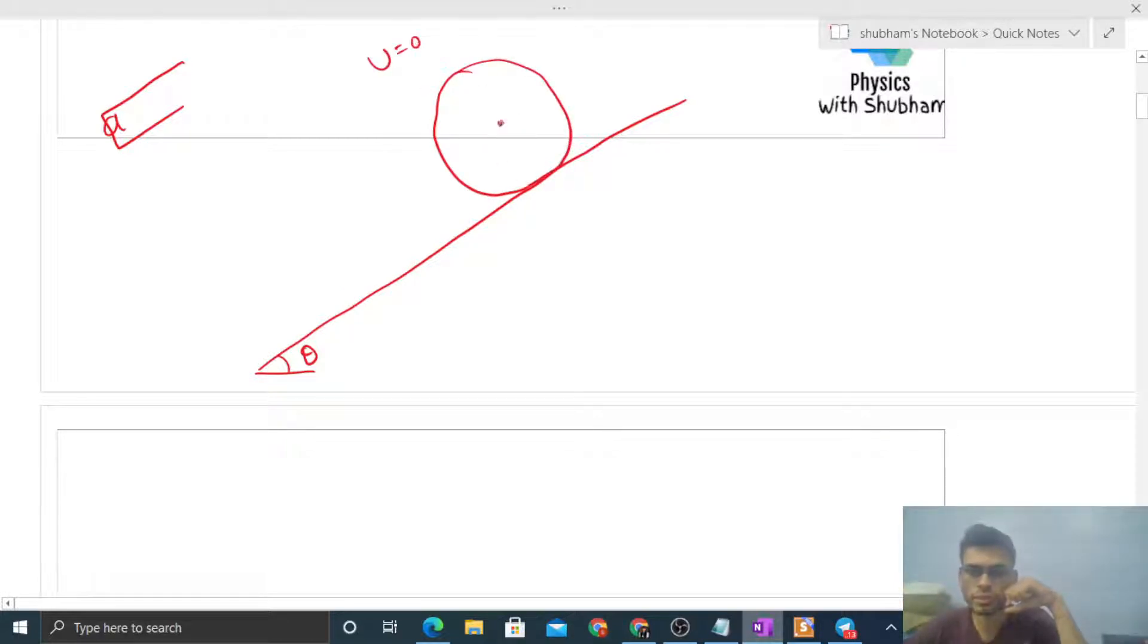Now you can see how many forces are acting. One is mg, which you can directly write as components: mg sin theta and mg cos theta. Then there will be normal reaction from the inclined surface and there will be friction force.